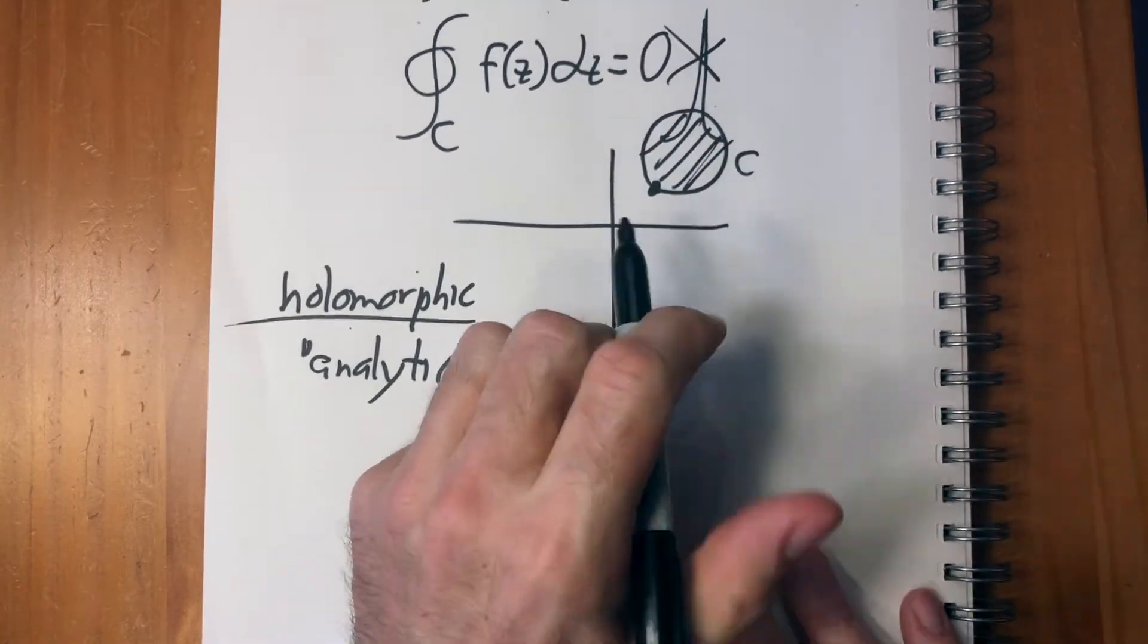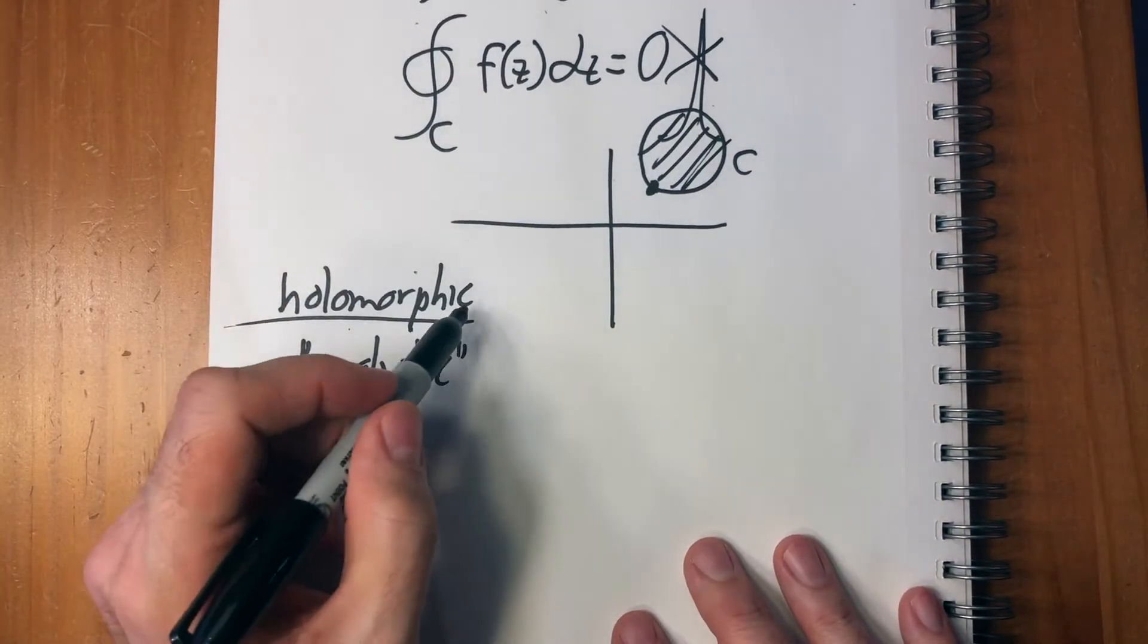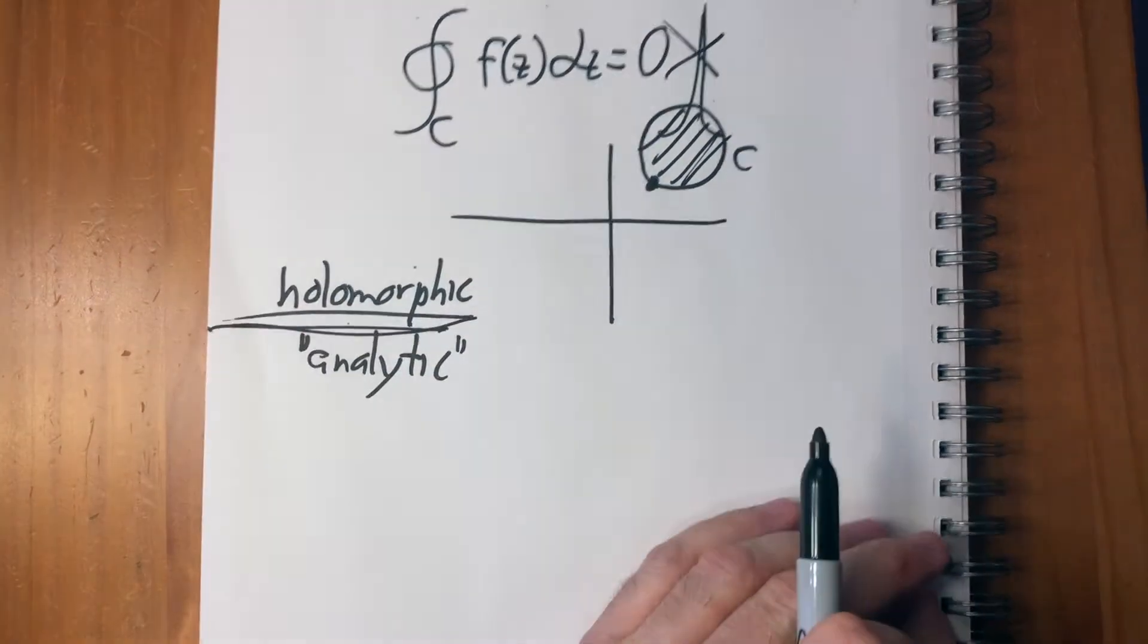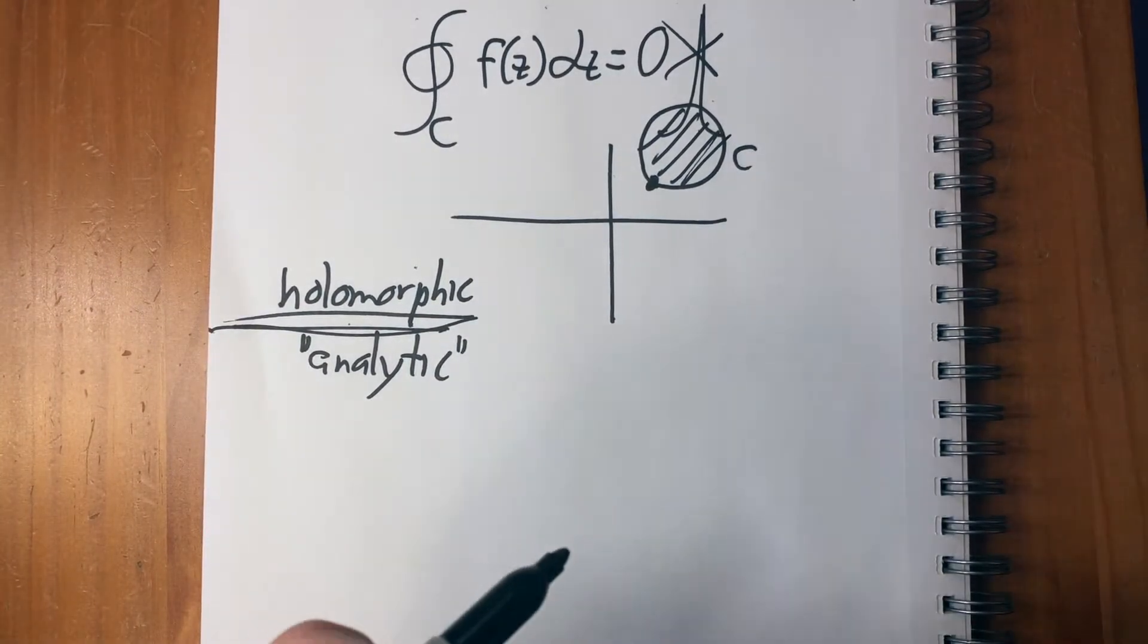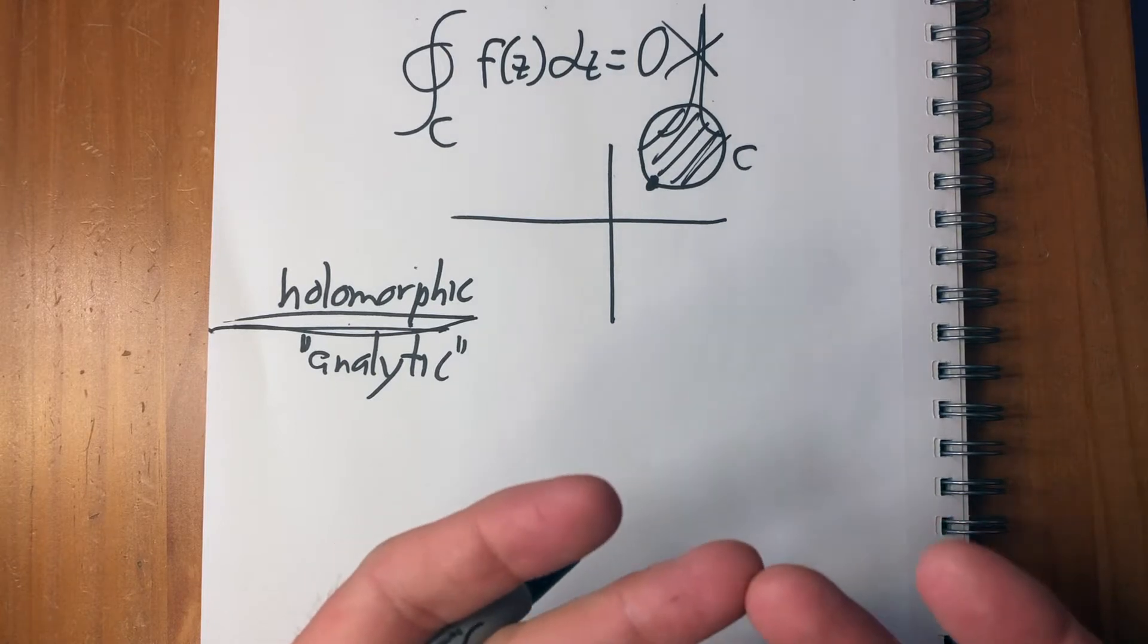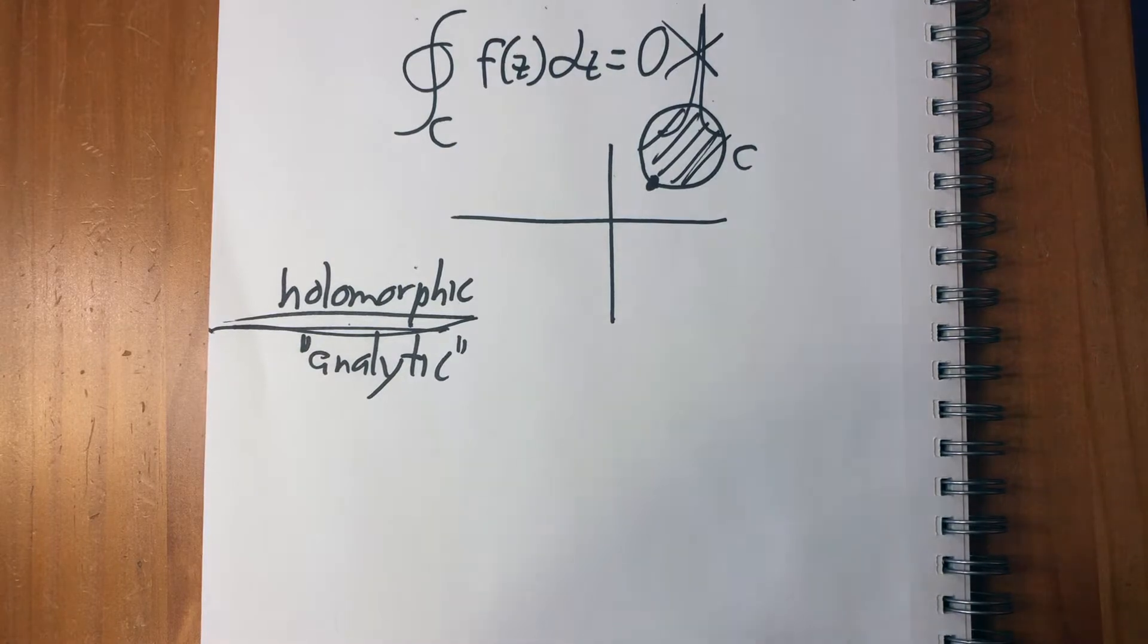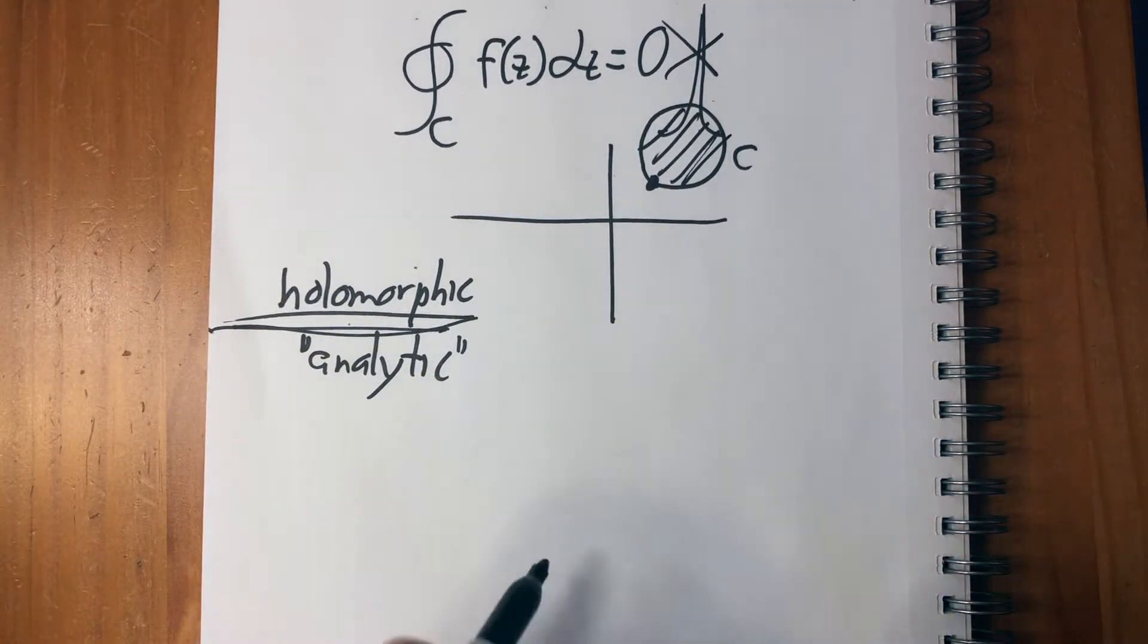The condition that a function be holomorphic, meaning that it's differentiable everywhere, adds a lot of structure and limitations to what the function is. It limits its behavior or it sort of bounds its behavior in very strong ways.